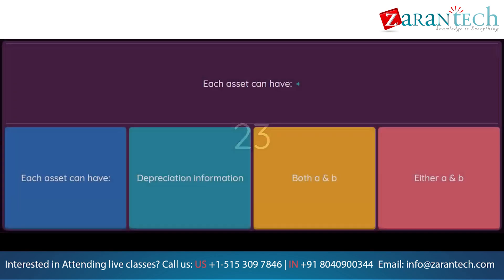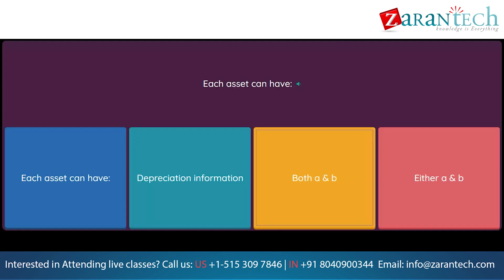Question: Each asset can have. Option 1: each asset can have. Option 2: depreciation information. Option 3: both A and B. Option 4: either A and B.